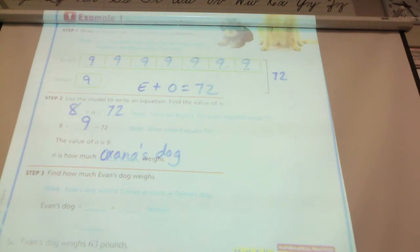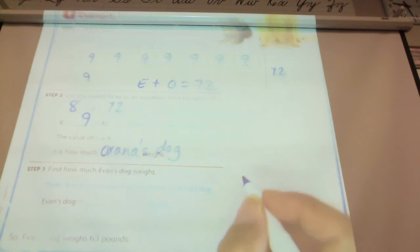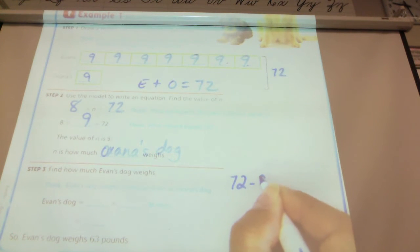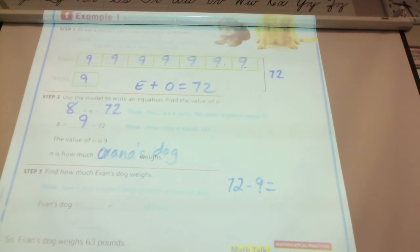Now, if I ask you the question how much Evan's dog's weight? How many of you think you can tell me how much Evan's dog weighed? 72 minus Oksana's dog's weight? Yes. That would work. That's not the option they put up here. But 72 minus 9 equals what? 63.